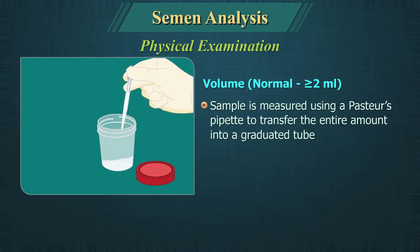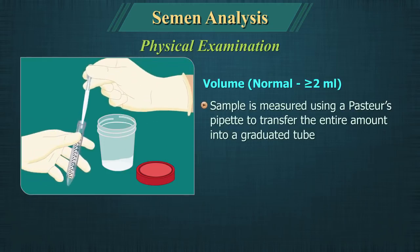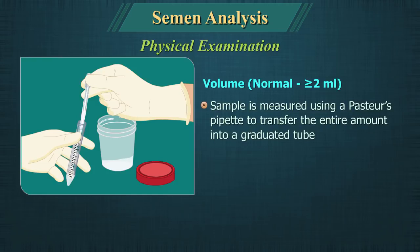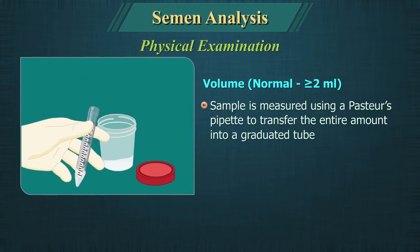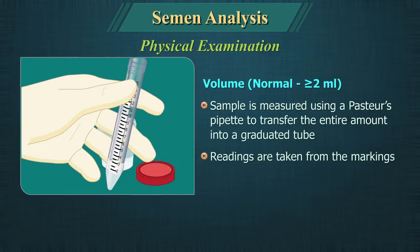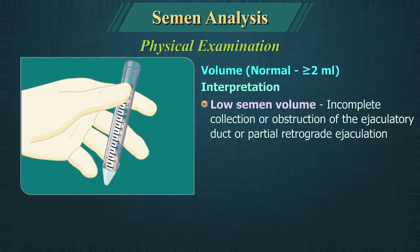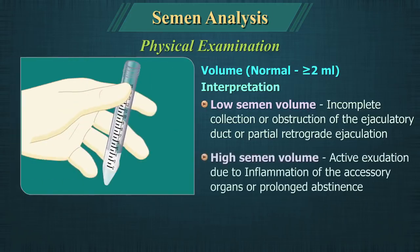Volume: The volume of the semen sample is measured using a Pasteur's pipette to transfer the entire amount into a graduated tube, and readings are taken from the markings. Low semen volume may be suggestive of incomplete collection, obstruction of ejaculatory ducts, or partial retrograde ejaculation. High volumes may be associated with active exudation due to inflammation of the accessory organs or prolonged abstinence.